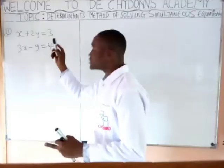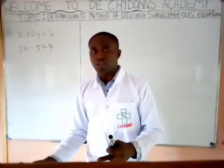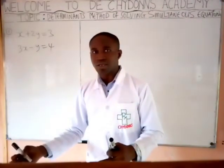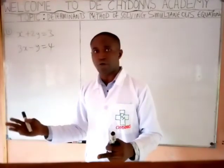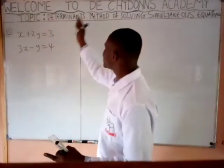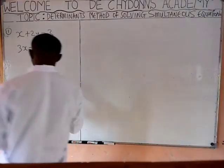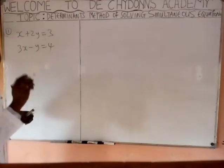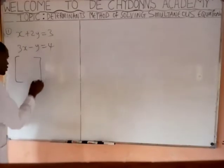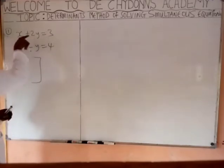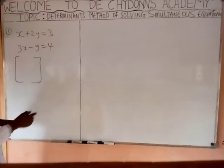Apart from the determinant method, we have the elimination method, substitution method, graphical method, and so on to solve it. We can also solve it using the determinant method. To solve it using the determinant method, you create this box and collect the coefficients of these letters.